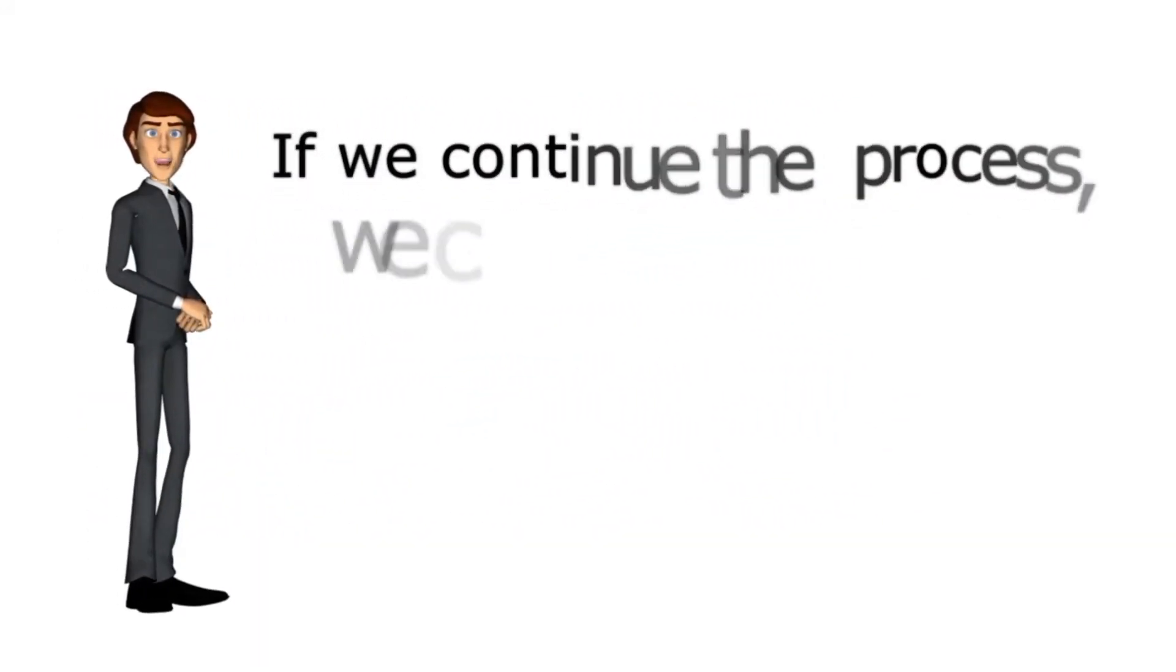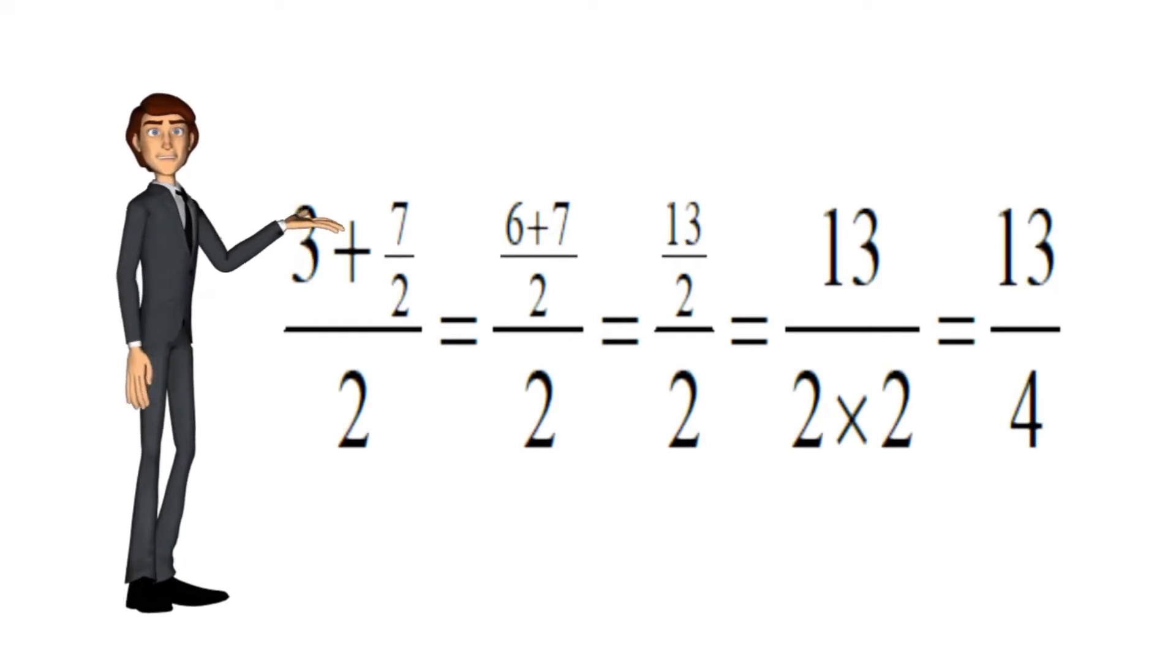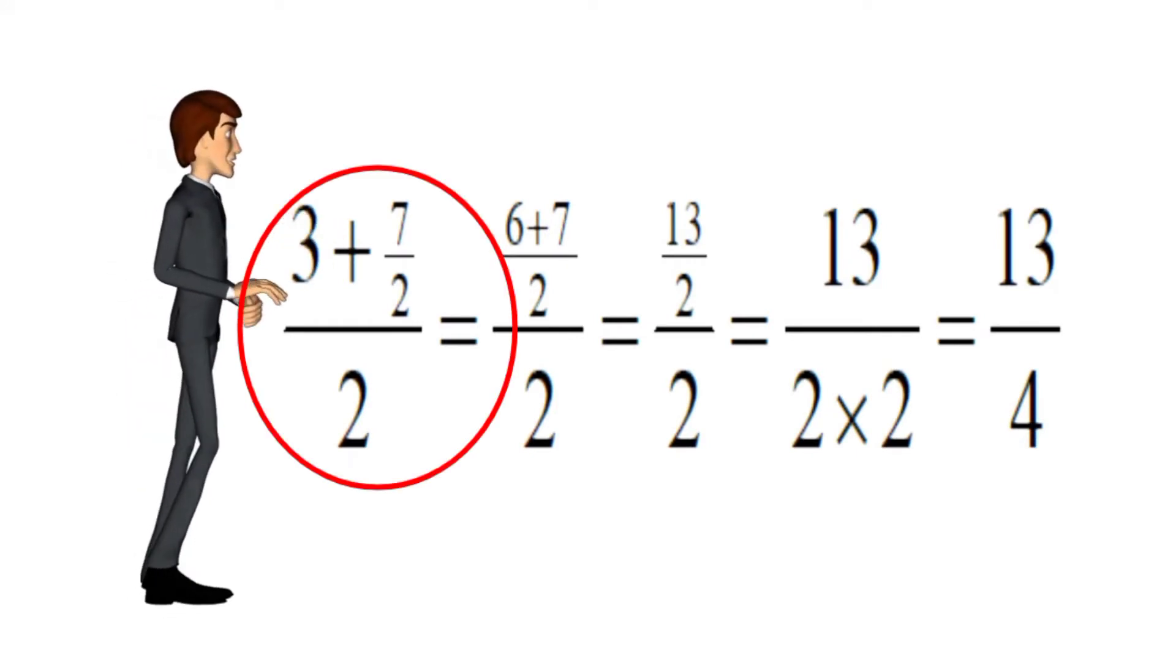If we continue the process, we can find many more rational numbers between 3 and 7 by 2. 3 plus 7 by 2, by 2, is equal to 13 by 4.